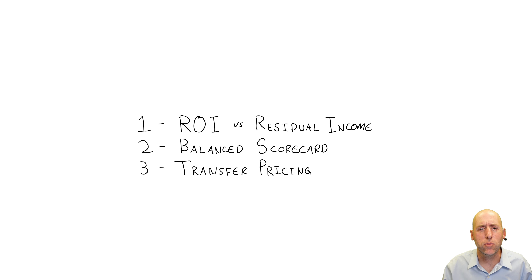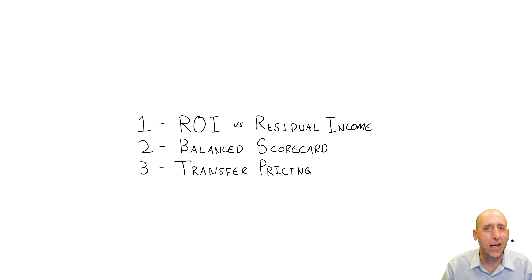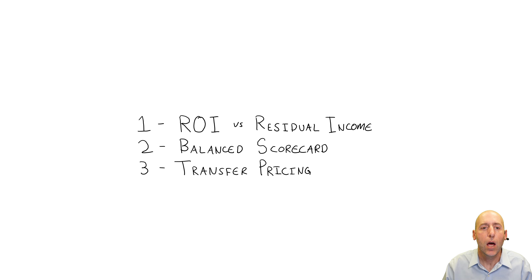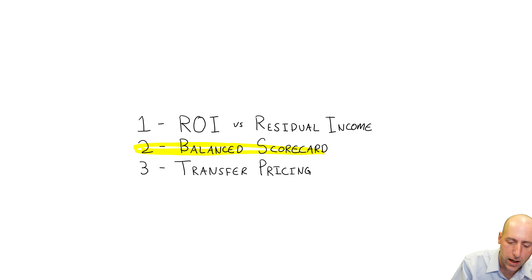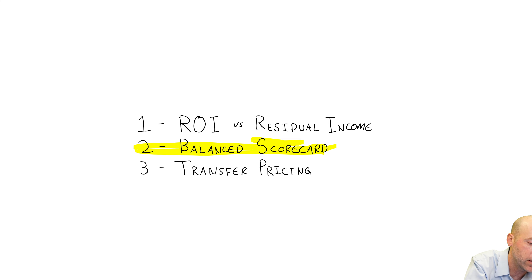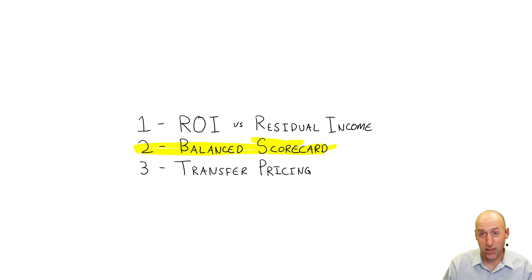Welcome to module 11, our module on performance measurement. This is a management accounting class — we want to use financial information to help us make decisions for our company. One important decision a company has to make is knowing how well you're doing: how do you measure success, and if you're not succeeding, what are the indicators of success, failure, and areas of improvement? That's a big topic this week, and we come at it from three angles.